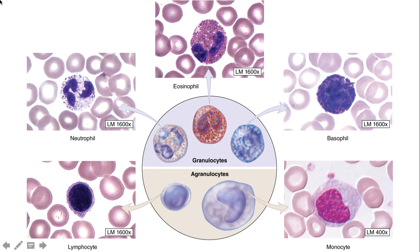The third component of the circuitry system we're looking at is the blood, which has a significant histology aspect. It's important to remember that blood is a connective tissue. Like other connective tissues, there's a cellular component and a non-living extracellular matrix, which in the case of blood is the blood plasma. Roughly 55% of blood is just blood plasma — primarily water with some proteins and other molecules.